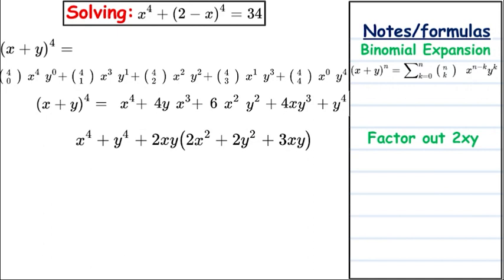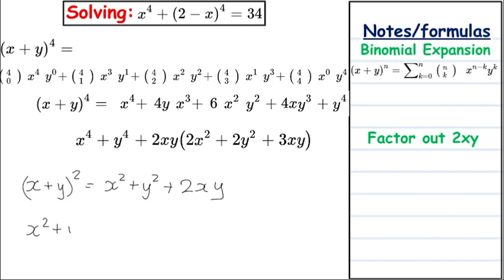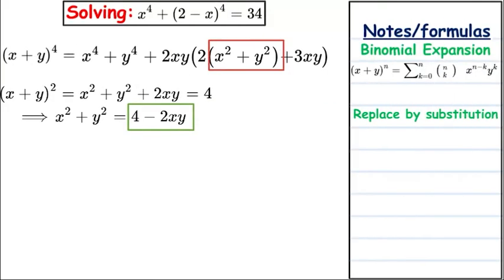Since x plus y equals 2, we can also write (x plus y)² equals x² plus y² plus 2xy, and therefore x² plus y² equals (x plus y)² minus 2xy. Replacing x plus y with 2, we get x² plus y² equals 4 minus 2xy.